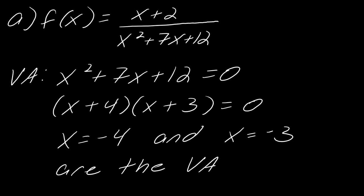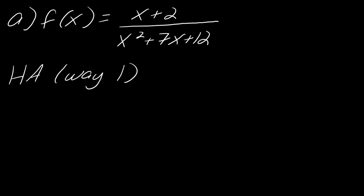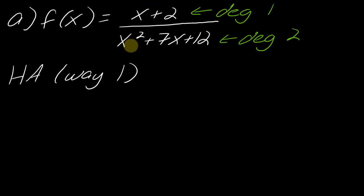Now for horizontal asymptotes, using way 1: the degree of the numerator is 1 (highest variable is x) and the degree of the denominator is 2 (highest variable is x²). When the degree of the bottom is greater than the degree of the top, the horizontal asymptote is automatically y equals 0. That's pretty straightforward.